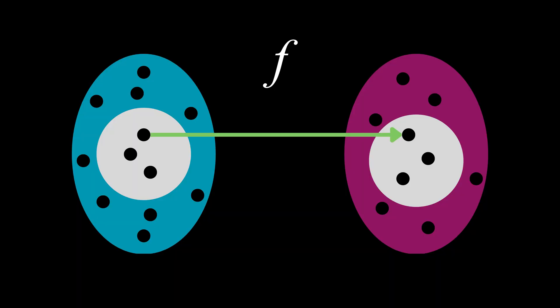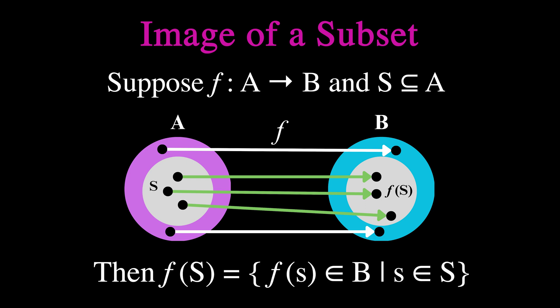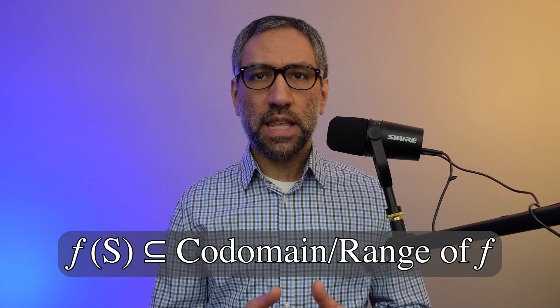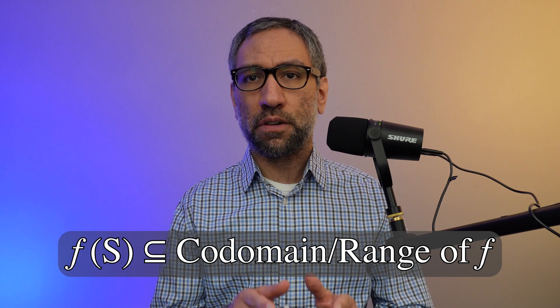Next, let's talk about the image of a subset. The image of a subset is the set of all output values obtained from applying a function to each element of the subset. More specifically, if we have a function f that maps elements from a set A to elements in a set B, and we have a subset S of A, then the image of S under f is the set of all elements in B that are mapped by f from an element in S. The image of a subset is denoted by f(S), and it is a subset of the range or codomain of f. To find it, we simply apply the function to each element of the subset and collect all the resulting output values.